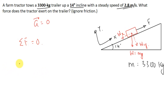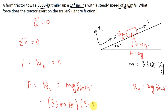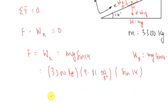The net force in the X direction gives F minus W_X equals zero, so F equals W_X. Since this angle is 14 degrees, the component W_X equals mg sin(14°). Substituting M = 3300 kg and g = 9.81 m/s², on solving we get the force to be 7.8 kilonewtons. This is the force exerted by the tractor on the trailer.